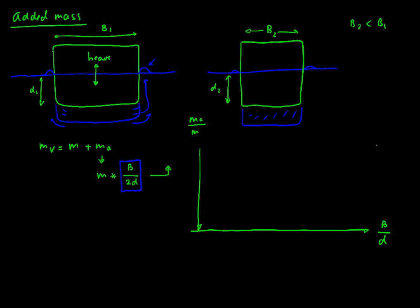We could sketch a line which is something like this. Meaning that if we have a beam to draught ratio of say more or less 2, then here going to the left we have a figure of 1.